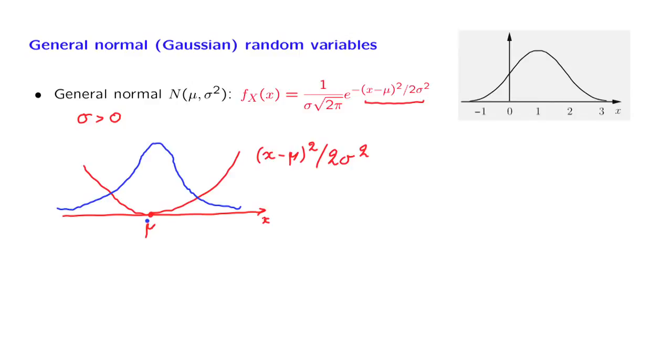What is the mean of this random variable? Since this term is symmetric around mu, the PDF is also symmetric around mu. And therefore, the mean is also equal to mu.